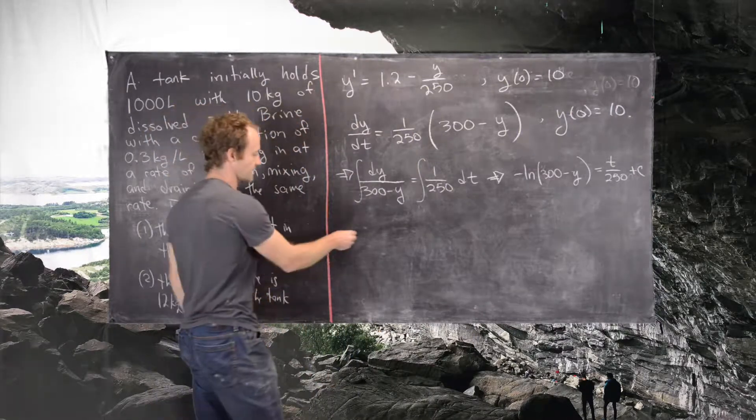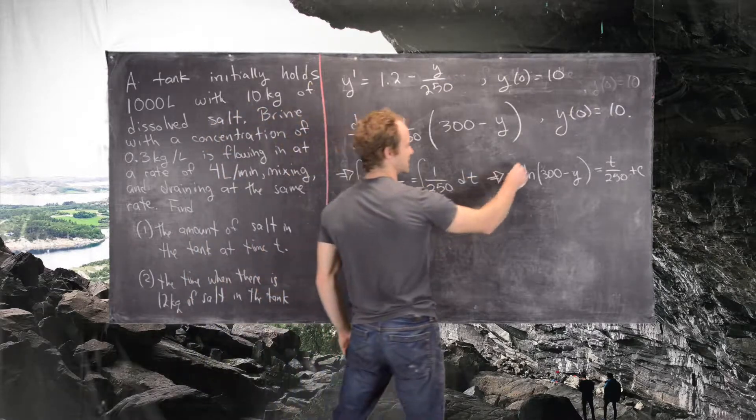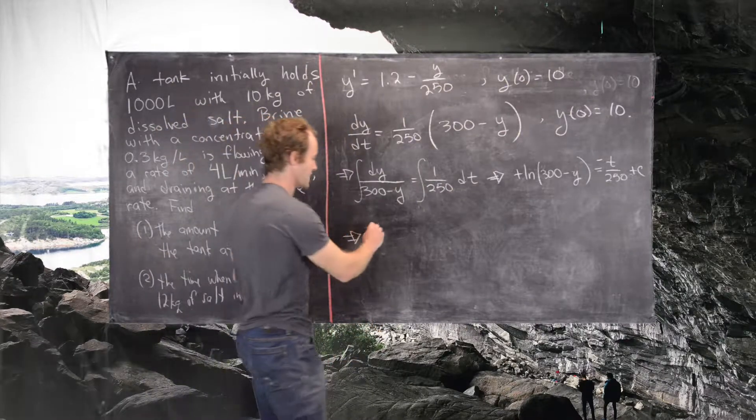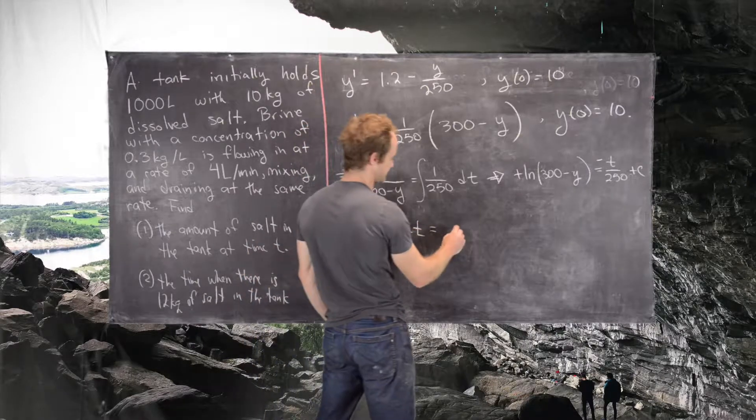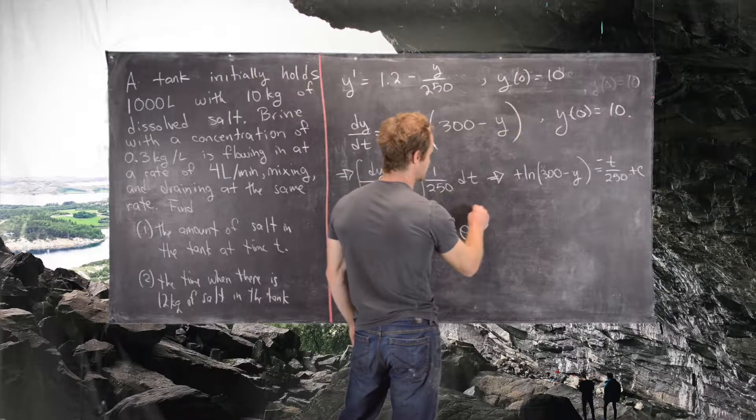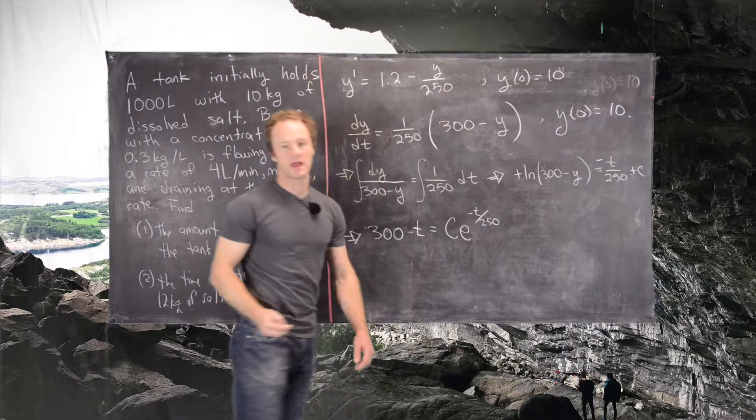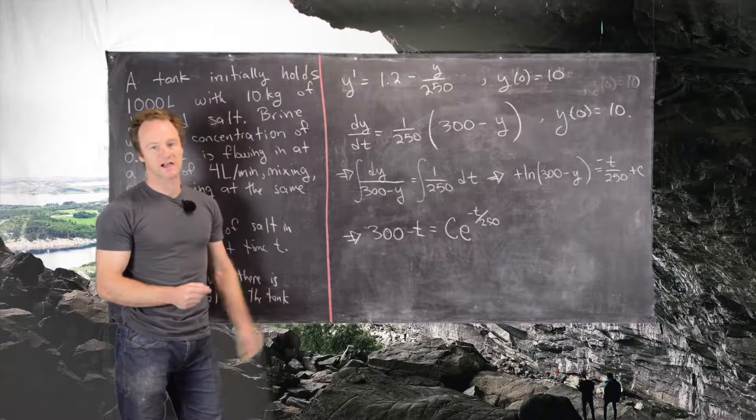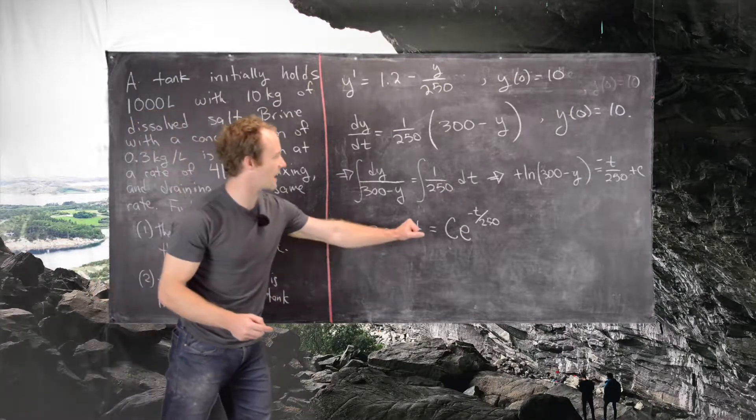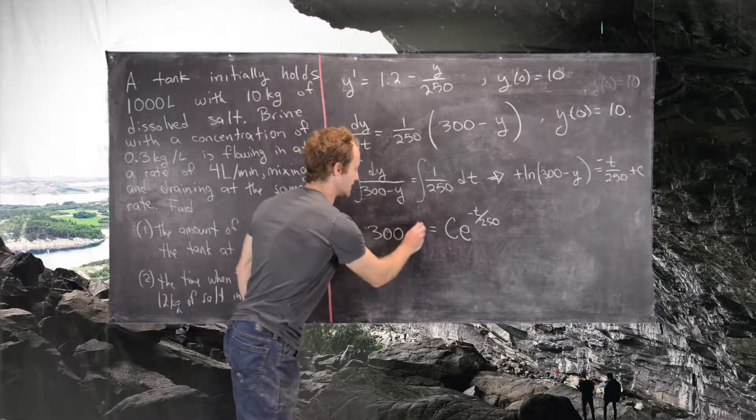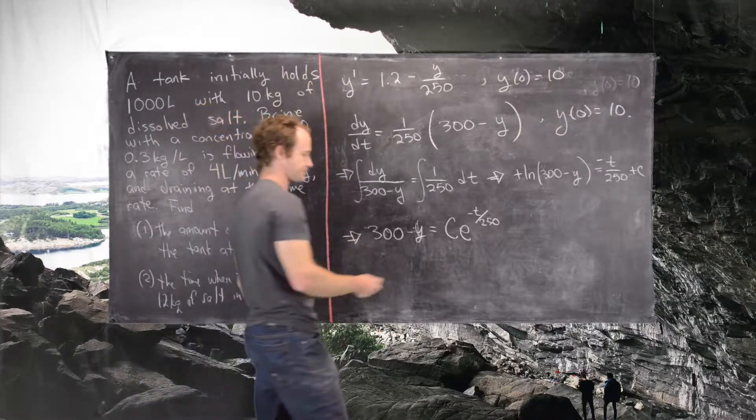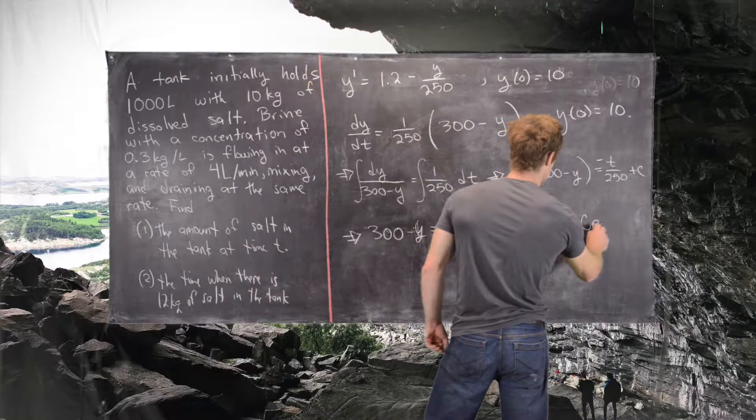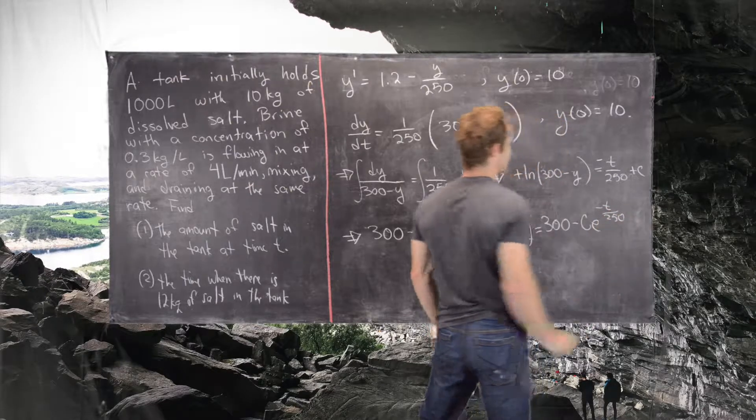Now we can solve for y. What I'll do first is move this minus sign to the other side of the equation, and I'll absorb it into the constant. That gives me 300 minus y equals some constant times e to the minus t over 250, where I've used exponent rules to rewrite my constant. This new constant is equal to the exponential of the old constant. And then I notice I made a mistake here. This should be 300 minus y. And then finally, this gives us y is equal to 300 minus c e to the minus t over 250.